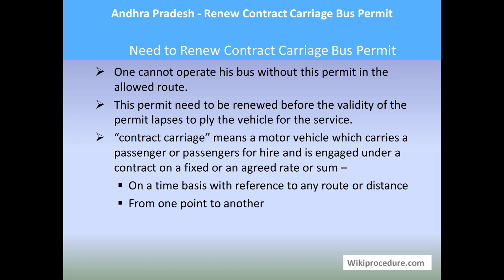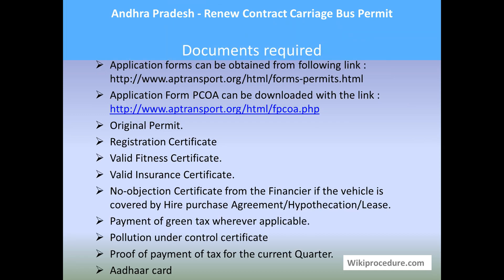One cannot operate a bus without this permit on the allowed route. This permit needs to be renewed before the validity of the permit lapses. Contract carriage means a motor vehicle which carries a passenger or passengers for hire, engaged under a contract at a fixed or agreed rate. There are basically two types: on a time basis with reference to any route or distance, such as morning and evening travel from a residential route to the office.